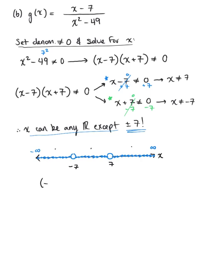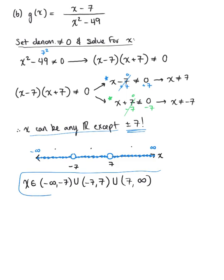We have the interval from negative infinity to negative 7, the interval from negative 7 to positive 7, and last but not least, the interval from positive 7 to positive infinity. X can be any real number in these three intervals, and because we have three separate intervals, we unite them with a union symbol. This is our final answer for the domain of g(x).